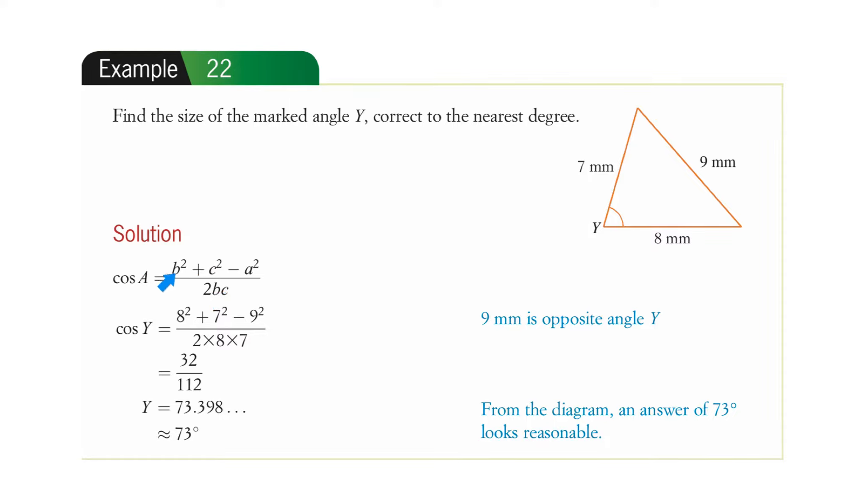So cosine A equals, and we just fill the numbers in, 8 squared plus 7 squared. Remember, that's the included angle, so we take those first. 8 squared plus 7 squared minus 9 squared divided by 2 times 8 times 7. And that is that.